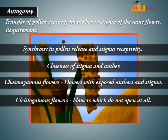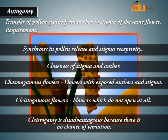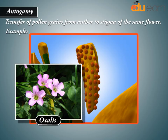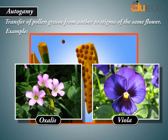Kleistogamous flowers are flowers which do not open at all. Kleistogamy is disadvantageous because there is no chance of variation. Examples include Oxalis and Viola.